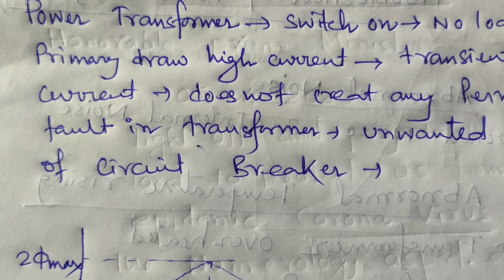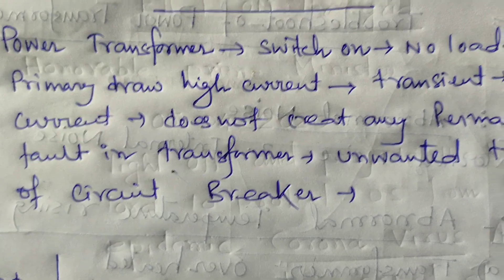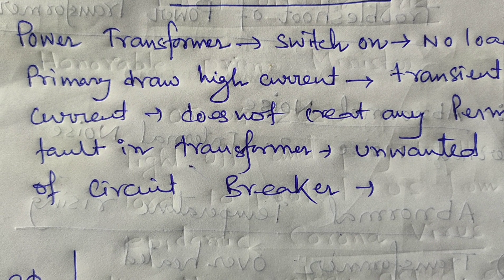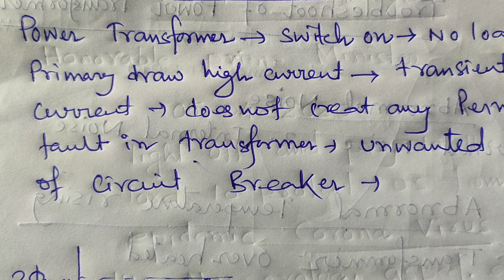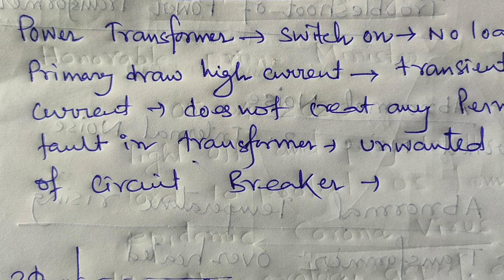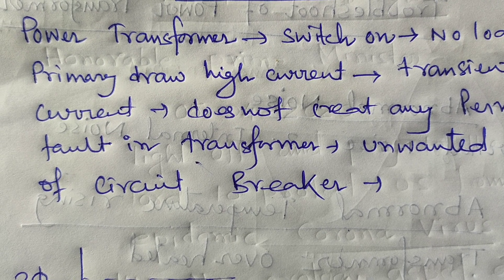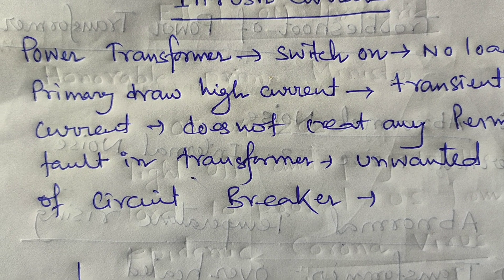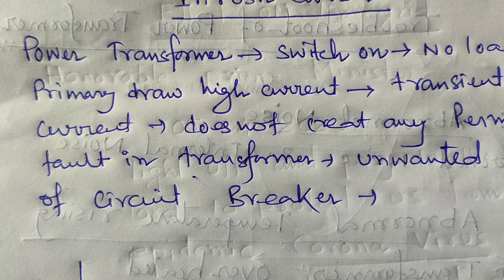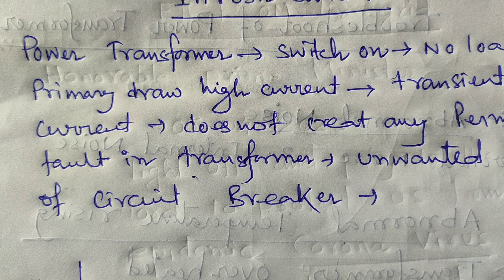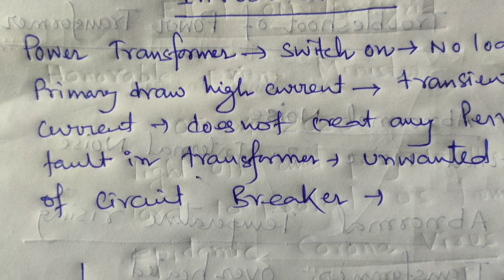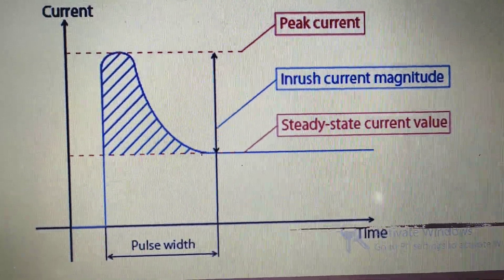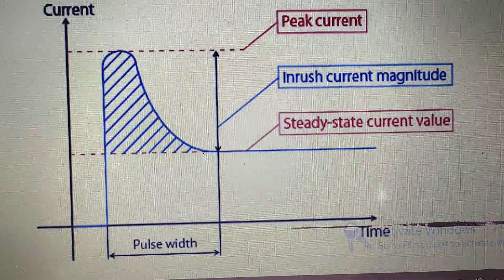High inrush current indicates more stress on the rectifier components and hence low reliability. The inrush current is specified in terms of average during a half cycle or peak, where the peak is about 40% larger than the average. The voltage range is 120 V or 240 V, and the operating temperature range specifies the conditions in which the limiting technique is effective. This is a graphical representation where the current axis and time axis are shown.